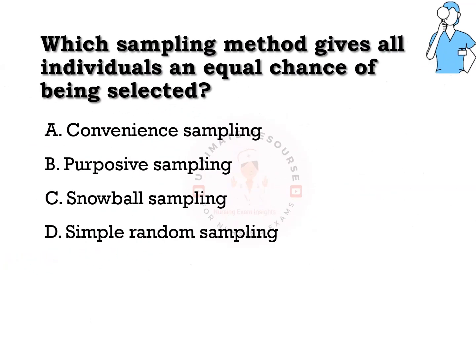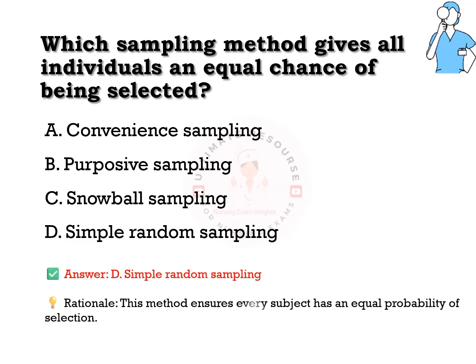Which sampling method gives all individuals an equal chance of being selected? Options are a) convenience sampling, b) purposive sampling, c) snowball sampling, d) simple random sampling. The answer is d) simple random sampling. This method ensures every subject has an equal probability of selection.